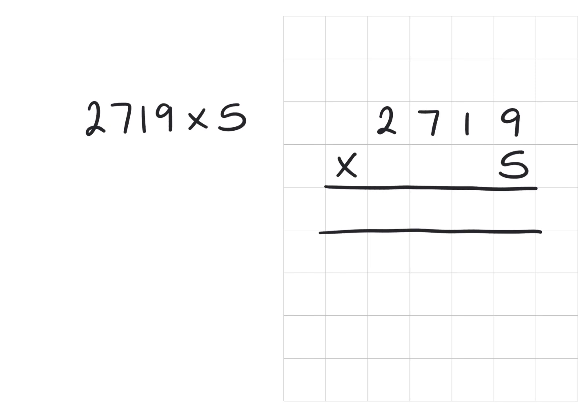So first of all we have our units here and this is where we're going to take all our calculations from which is the 5 units. So 5 lots of 9 is 45 and we're going to carry our 4 tens over into the tens column.